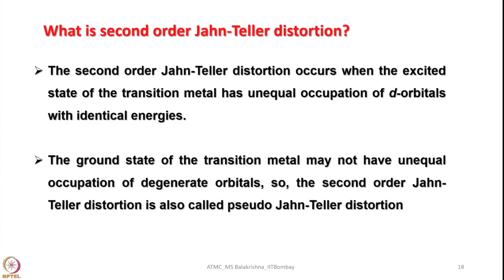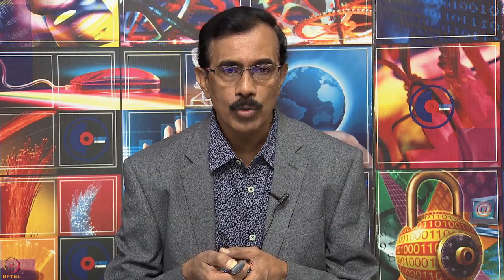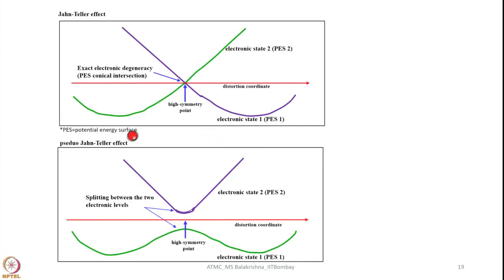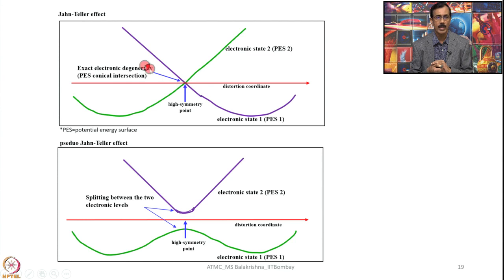What is second order Jahn-Teller distortion? The second order Jahn-Teller distortion occurs when the excited state of the transition metal has unequal occupation of d orbitals with identical energies. When you excite an electron from the ground state to the excited state and the excited state has unequal occupation of d orbitals — very similar to d4 and d9 — then we can anticipate second order Jahn-Teller distortion. The second order Jahn-Teller distortion is also called pseudo Jahn-Teller distortion. Looking at the potential energy surface, at a high symmetry point there is no effect, whereas in the Jahn-Teller case and the pseudo Jahn-Teller case the energy surface is different.